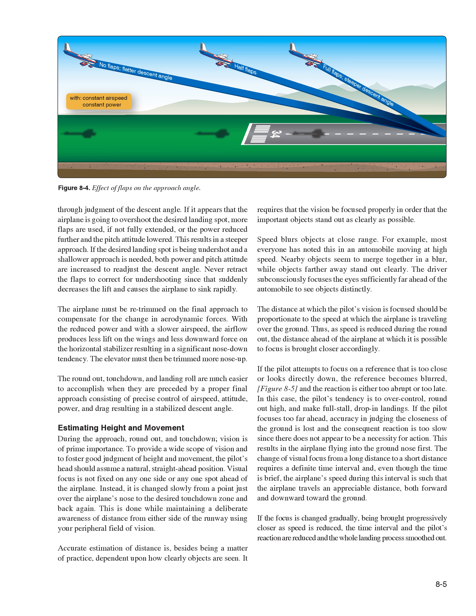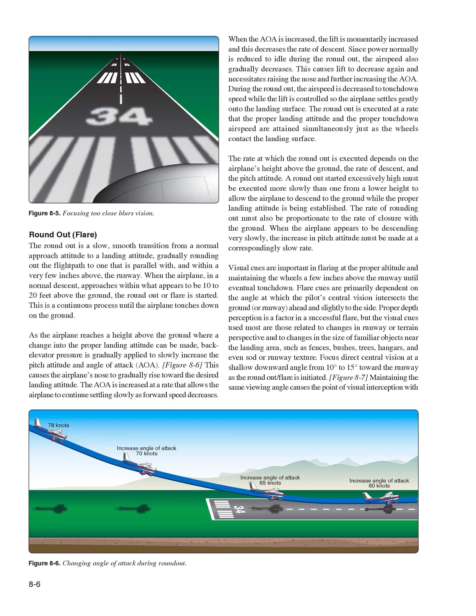If focus is too close, the pilot tends to over-control, round out high, and make full-stall drop-in landings. If the pilot focuses too far ahead, accuracy in judging the closeness of the ground is lost and the reaction is too slow, resulting in the airplane flying into the ground nose first. The change of visual focus from long to short distance requires a definite time interval during which the airplane travels an appreciable distance both forward and downward. If the focus is changed gradually, brought progressively closer as speed is reduced, the time interval and the pilot's reaction are reduced and the whole landing process is smoothed out.